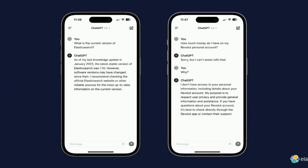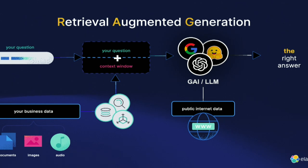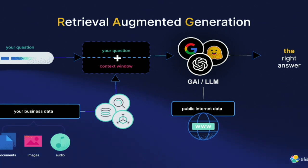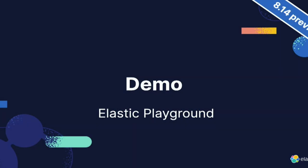For example, asking ChatGPT 'How much money do I have on my Revolut account?' — it says it can't help because it doesn't have access to your personal account. I don't want it to have access, but I still want to ask questions about my data. The solution is RAG (Retrieval-Augmented Generation): instead of sending the question directly to the LLM, you send it to your favorite search engine — Elasticsearch — which does term search, hybrid search, or vector search on your business data, then you send that context plus your question to the LLM and tell it: build a nice answer from the documents I'm providing, and if you don't have the answer, don't hallucinate.